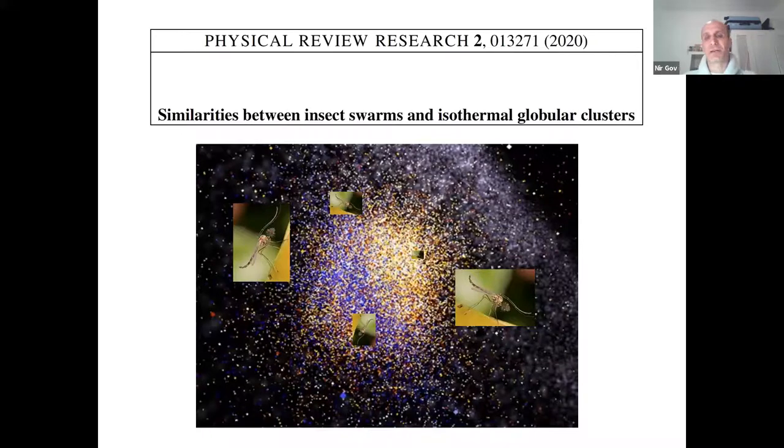So just last year, we published a work which actually looked more closely on the large-scale properties of these swarms, and specifically compared them to what is already known with regular gravity, about what is called isothermal globular clusters, which are shown here in the background. So that's one globular cluster. It contains millions of stars. Each of these dot points of light are stars, like our sun. And these globular clusters are some of the oldest structures in the universe. They are dispersed throughout the Milky Way galaxy. You can think of them as like mini galaxies in some sense.